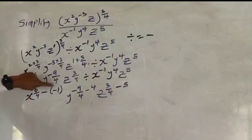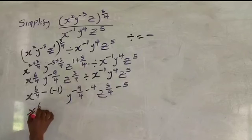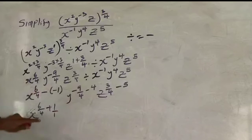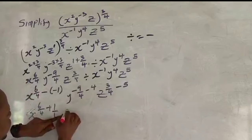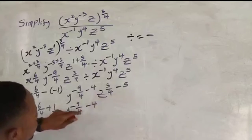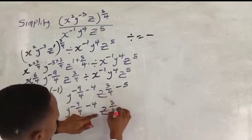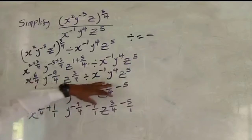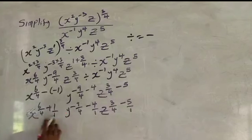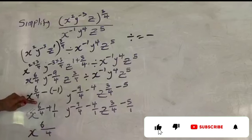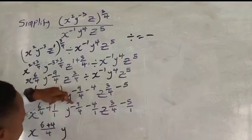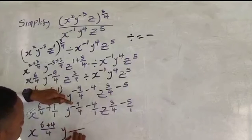Opening those brackets, the minus times minus gives a plus. So s is raised to power 6 over 4 plus 1. Since this is a fraction, let's write 1 as 1 over 1, and for y, we have minus 9 over 4 minus 4 over 1, and for z, we have 3 over 4 minus 5 over 1. Now let's find the LCM. The LCM of 4 and 1 is 4.